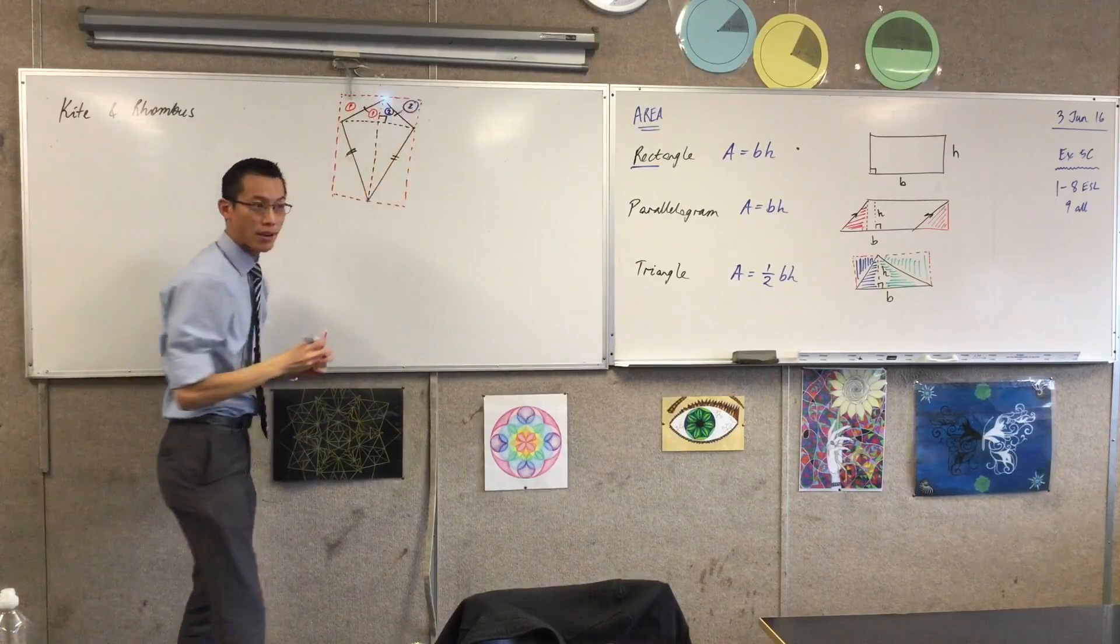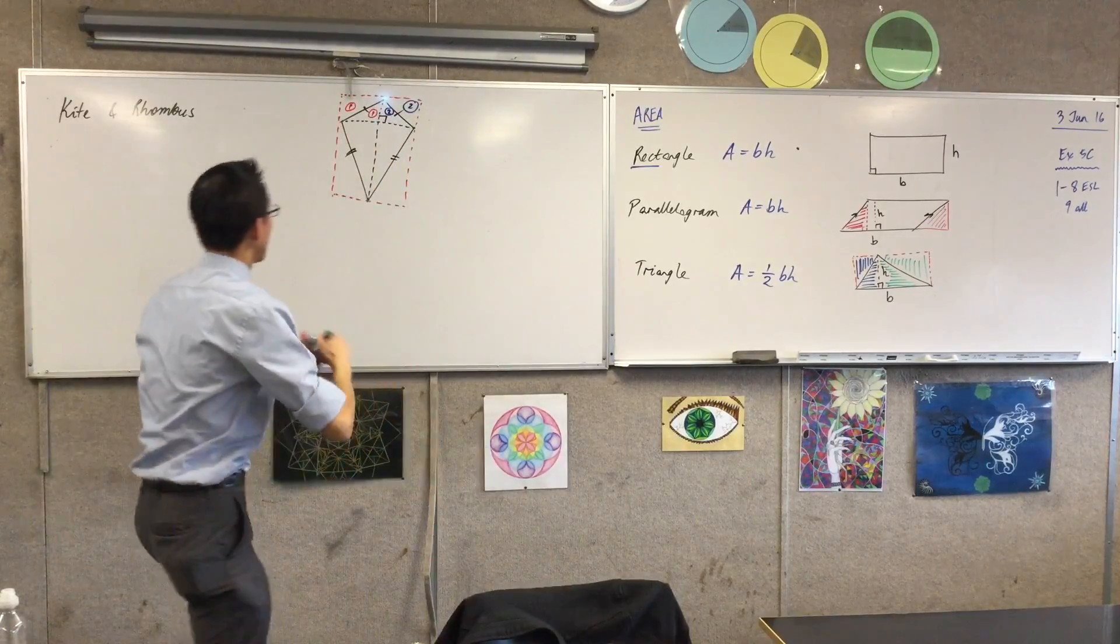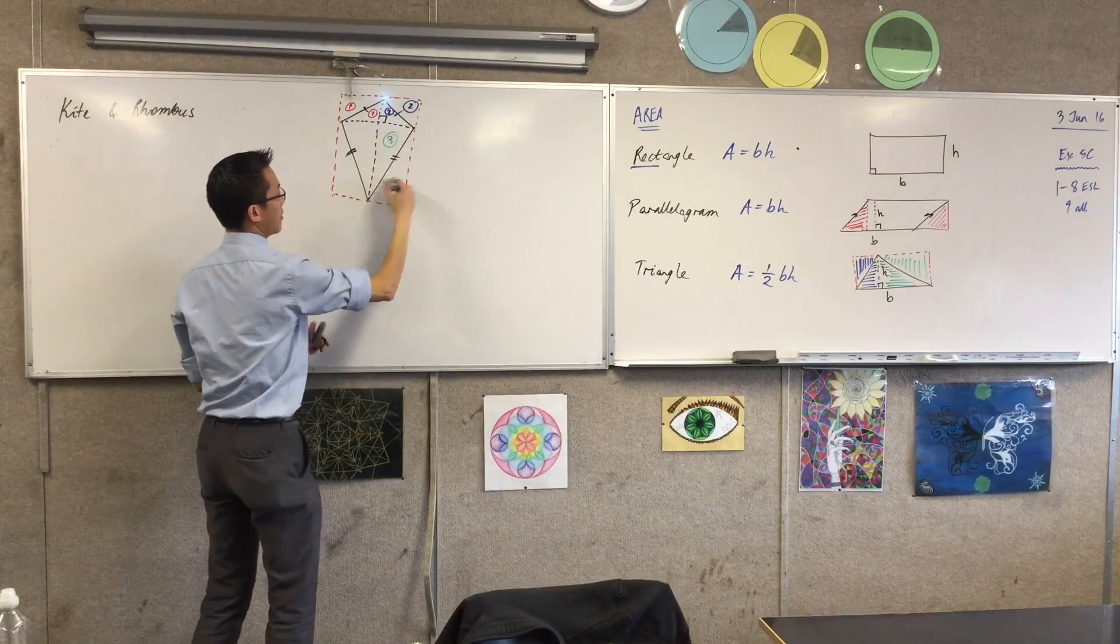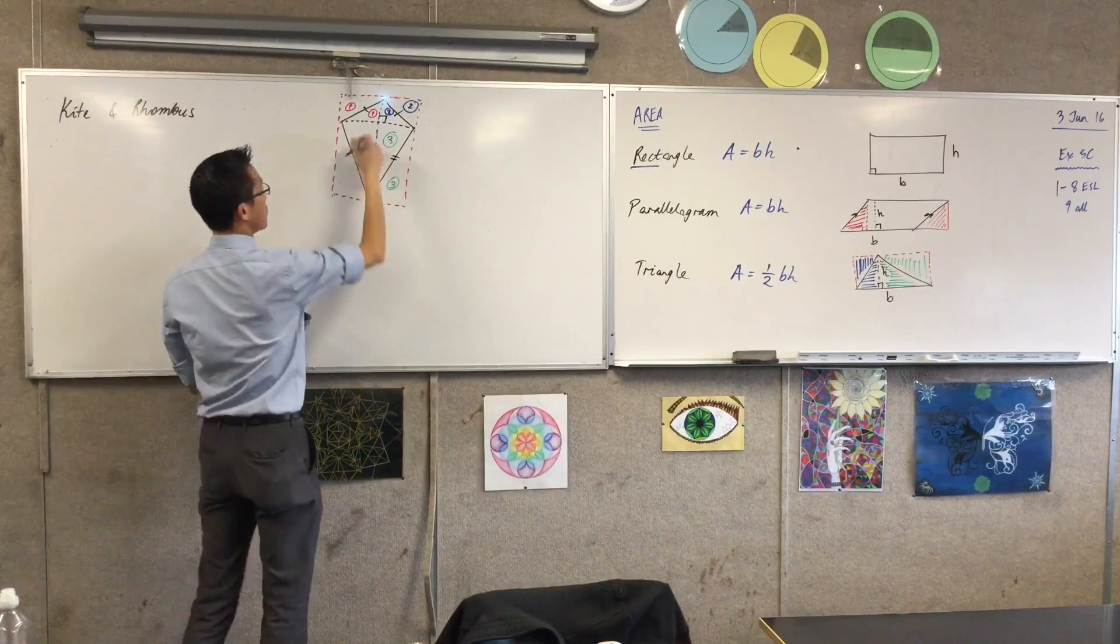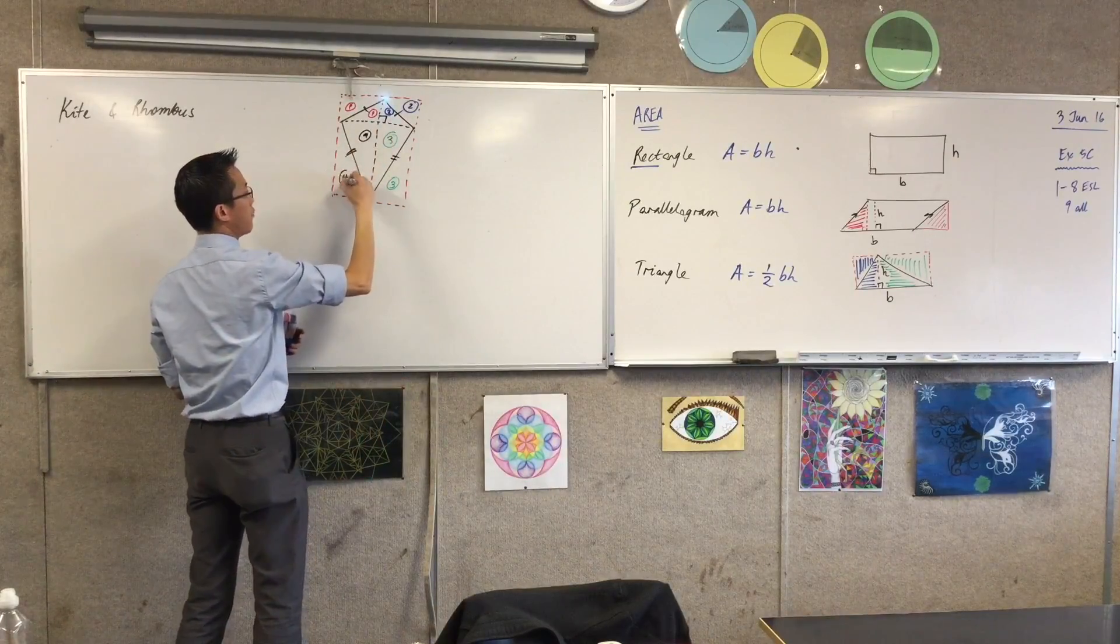there's another triangle two there. Keeping on going around, there's a three, there's another three. And lastly, you can say four and four.